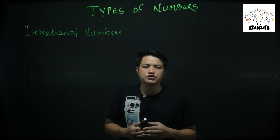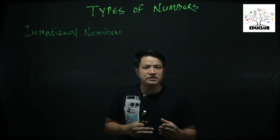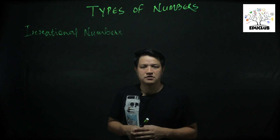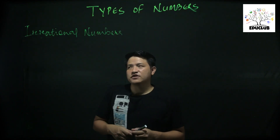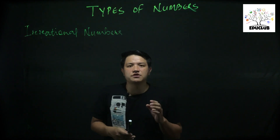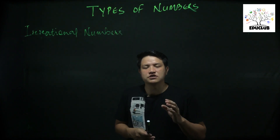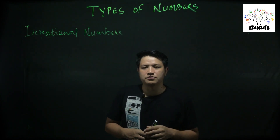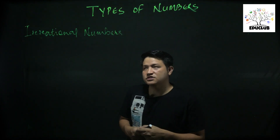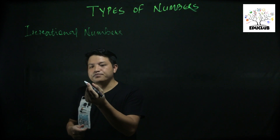Numbers which cannot be expressed in the ratio of integers are called irrational numbers. These are numbers that cannot be written in p by q form satisfying all the conditions. Let's see some examples of irrational numbers.